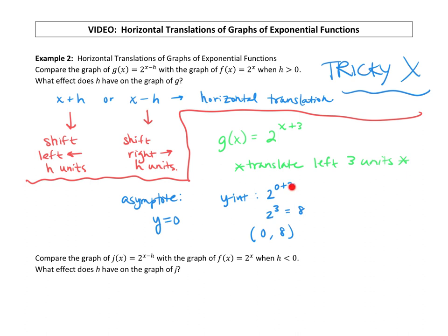Our domain does not change with a horizontal translation. It's going to be all real numbers. We also could say it's going from negative infinity to positive infinity. That captures every single real number for our domain. The range, because the asymptote is at y equals 0, the range is going to have our y's all greater than 0.